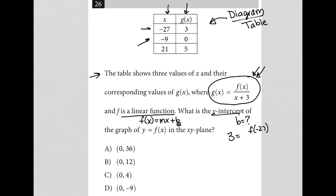So we'd have three equals f of negative 27 over negative 24. And of course, I can multiply both sides by negative 24, and I'd have negative 72 is equal to f of negative 27. So I'm gonna write that up here - f of negative 27 is equal to negative 72.